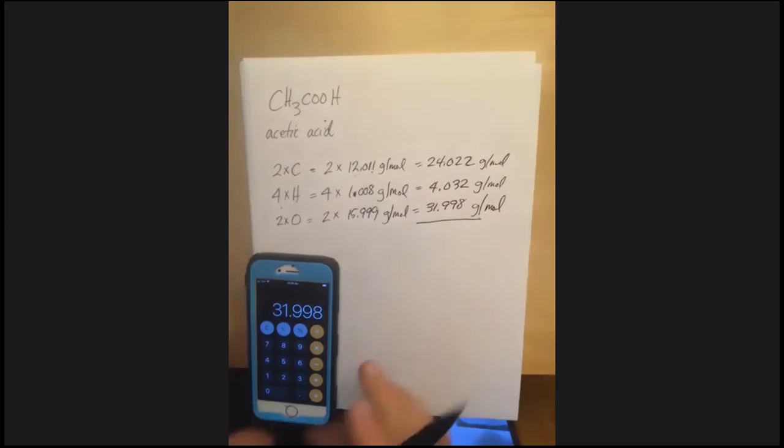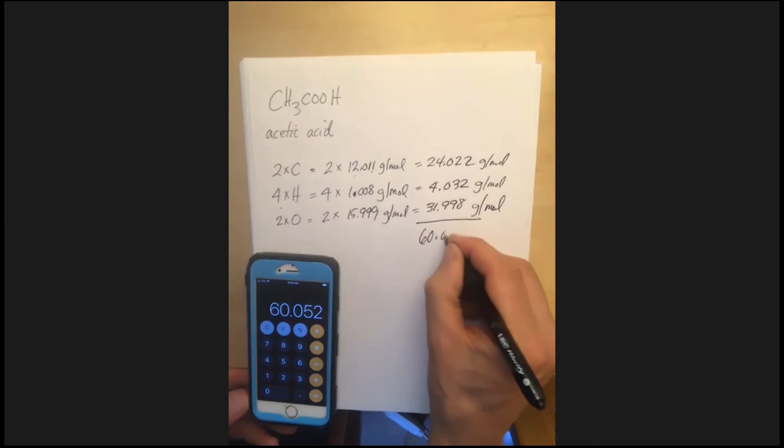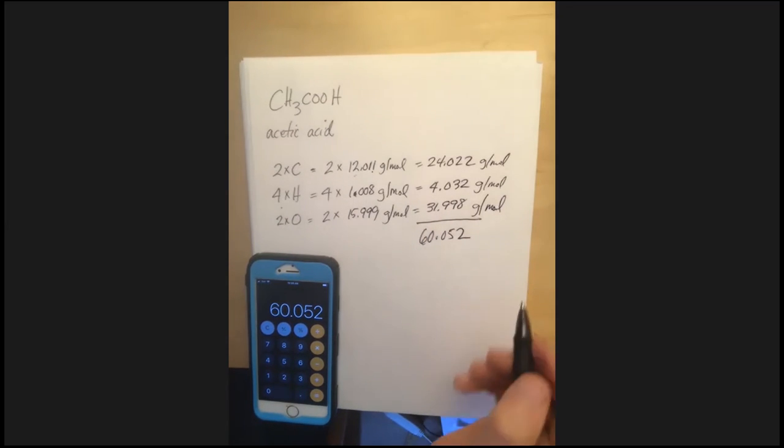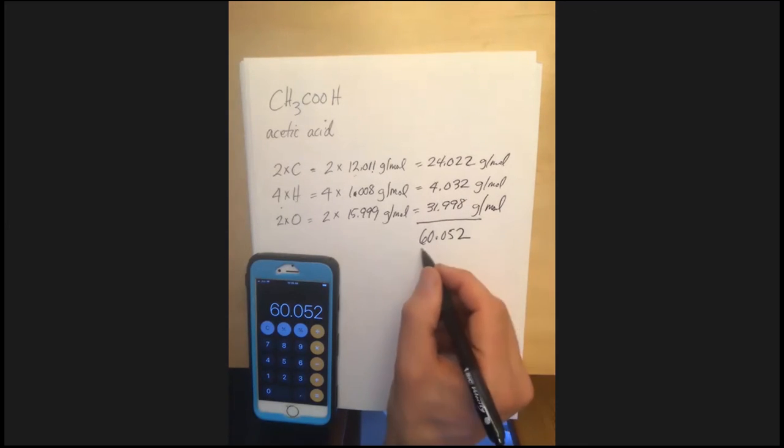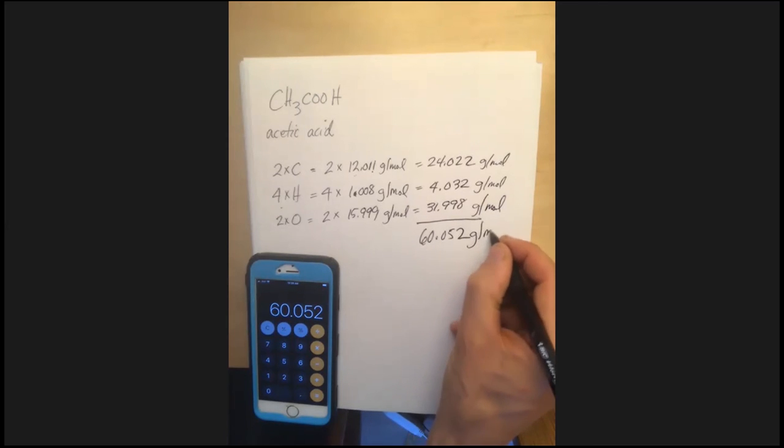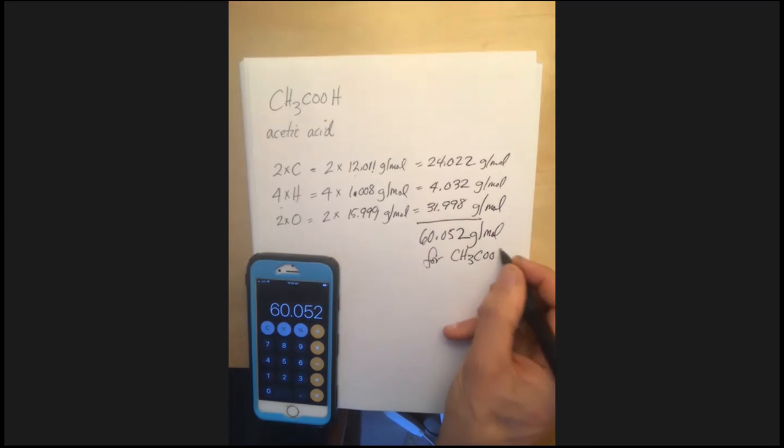And so if I add those numbers together, plus 4.032 plus 24.022 equals 60.052. And as I look at this, I say I've got, I'm adding three numbers together. All of them have three decimal places, so I think I can keep all three decimal places. And so I've got 60.052 grams per mole for CH3COOH acetic acid.